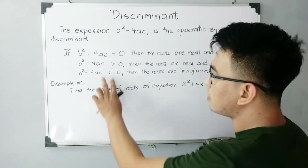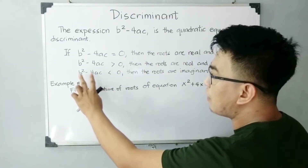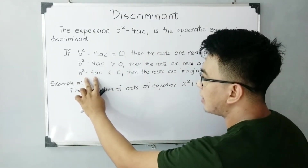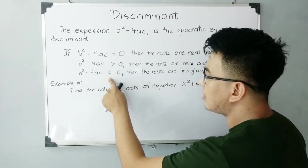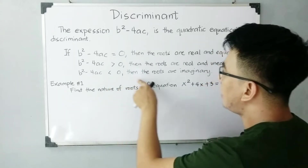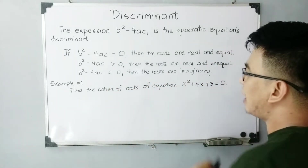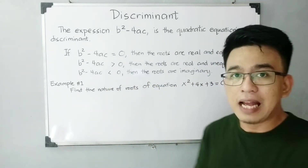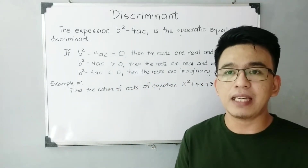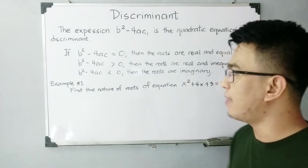For our third condition: if your discriminant is less than zero, then the roots are imaginary. We'll see how this is applied in the examples coming up.